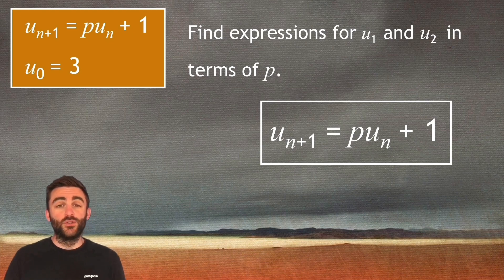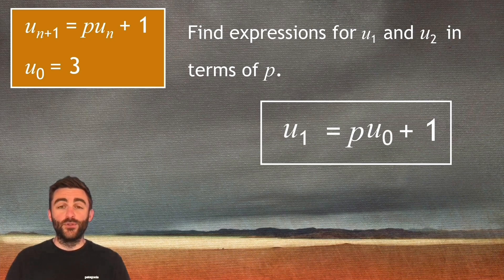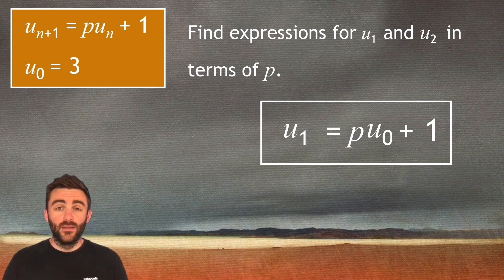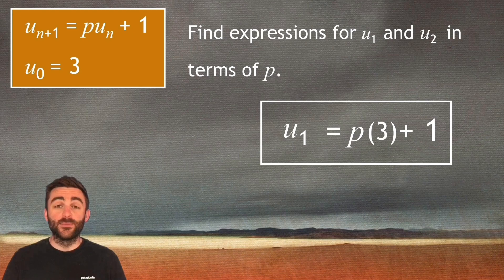To find u_1 we would substitute u_0 in. So we get u_1 is equal to p times u_0 add one. If we substitute our three in then u_1 is equal to p times three add one. And this leads us to our first expression u_1 is equal to three p add one. And we're halfway there.